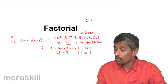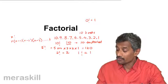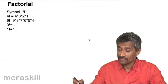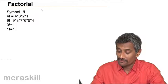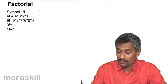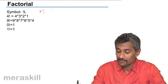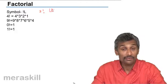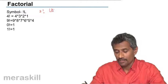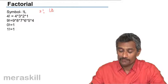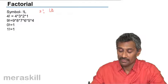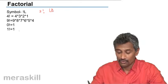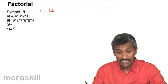Let's understand factorial in a deeper manner. The symbol is written as n! or as factorial n. For example, 4! = 4 × 3 × 2 × 1, and 9! = 9 × 8 × 7 × 6 × 5 × 4 × ... Also recall 0! = 1 and 1! = 1.